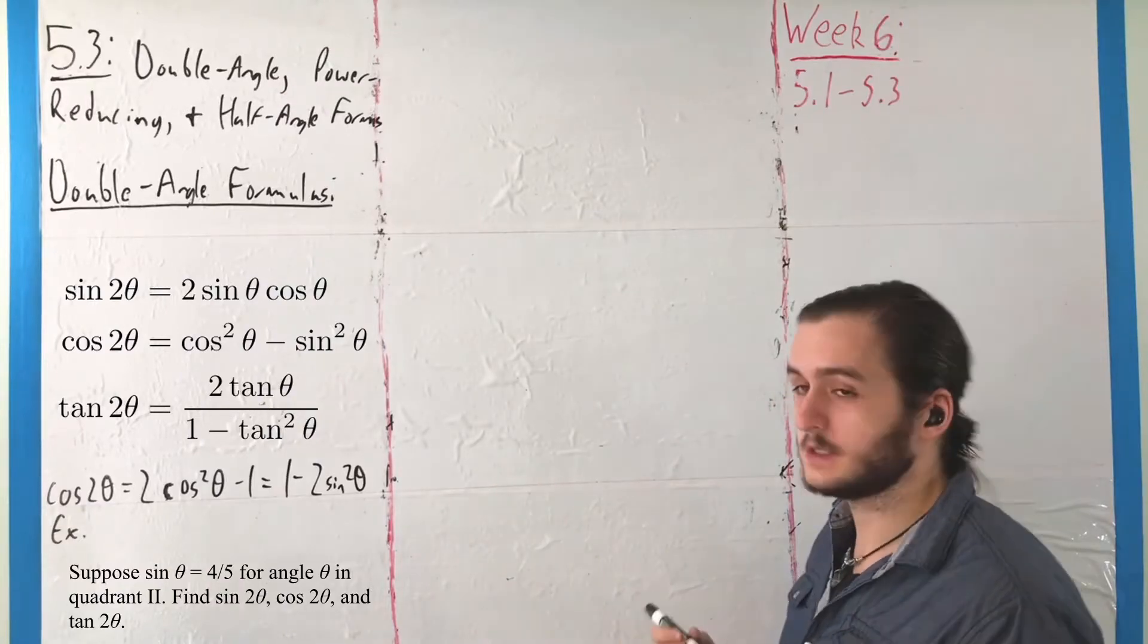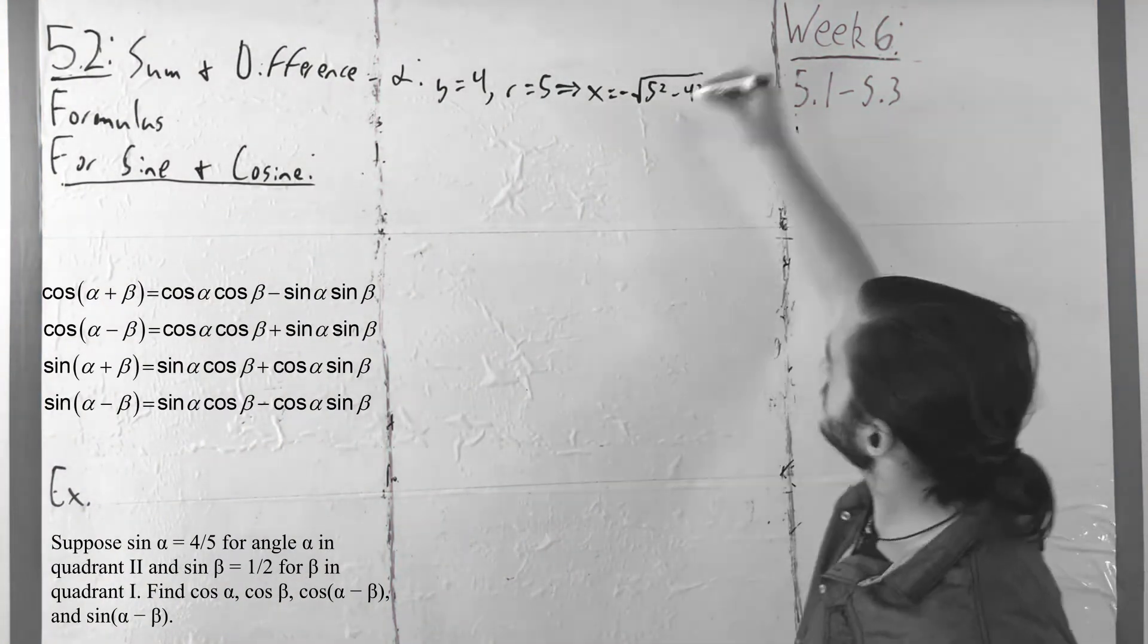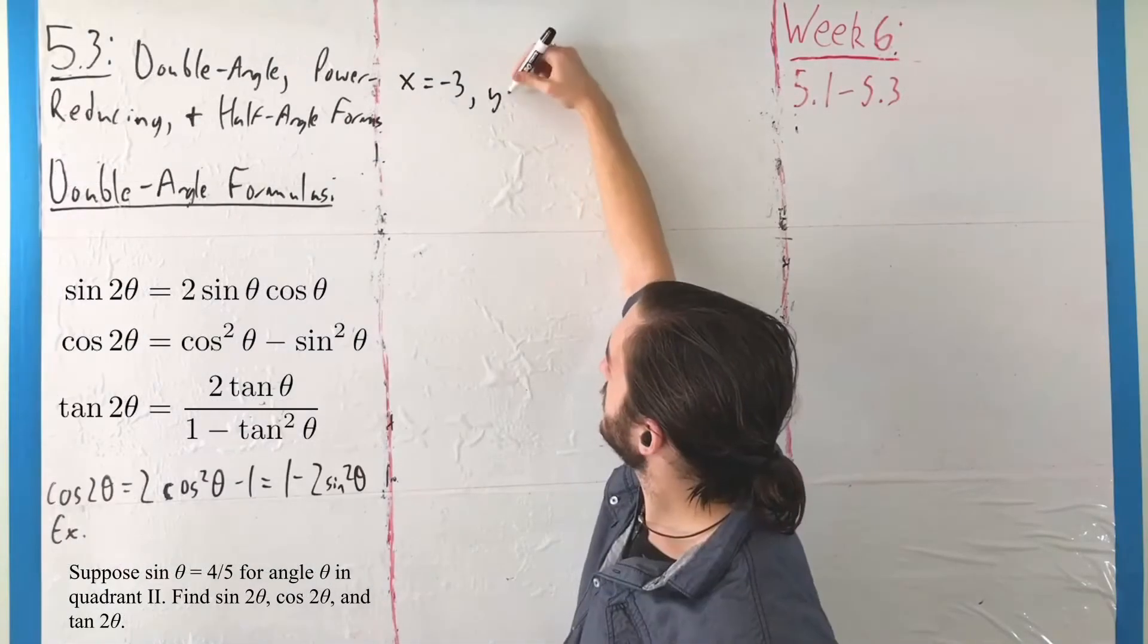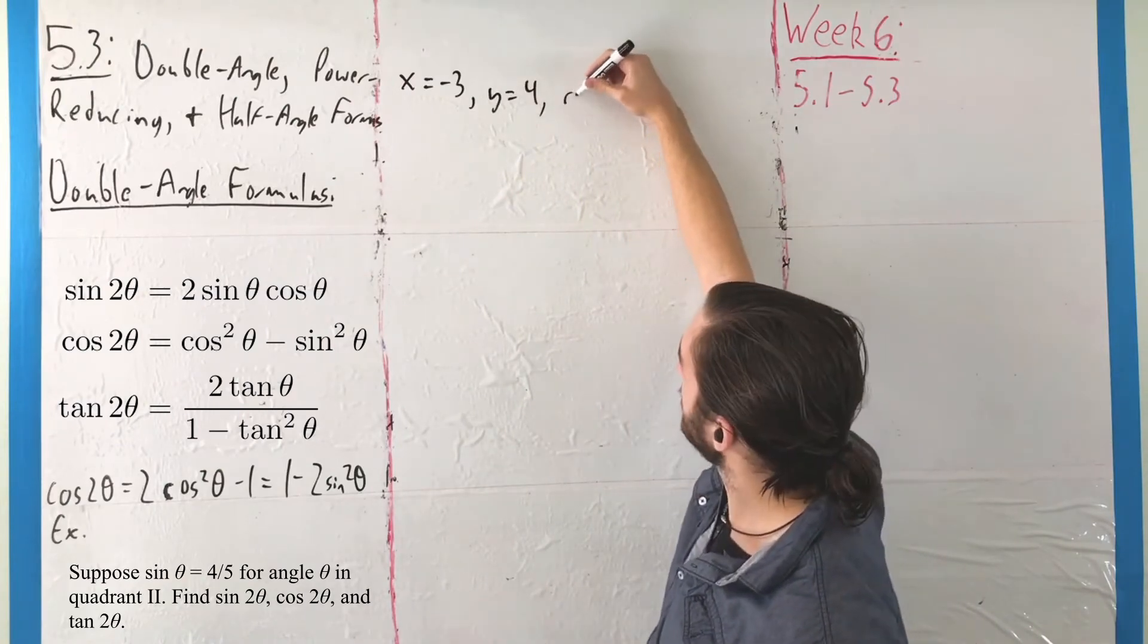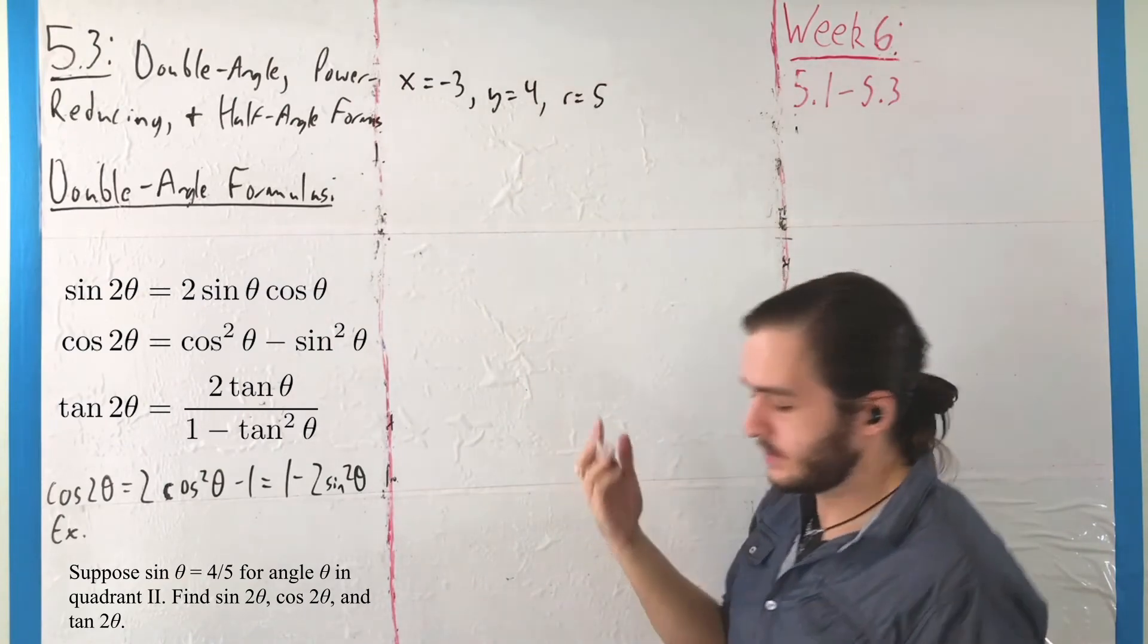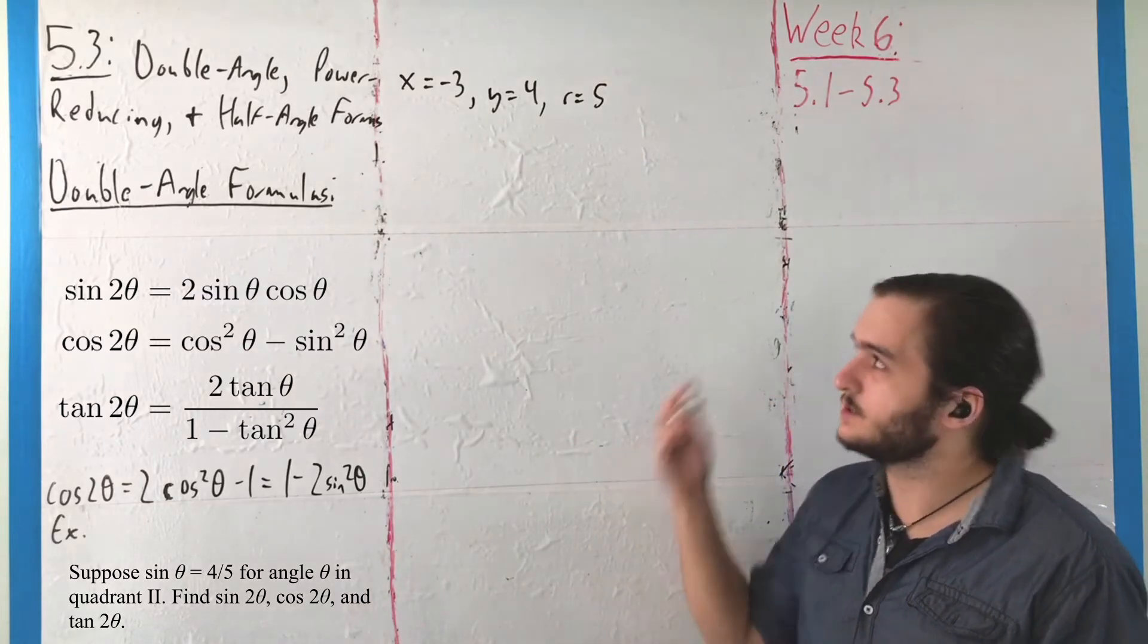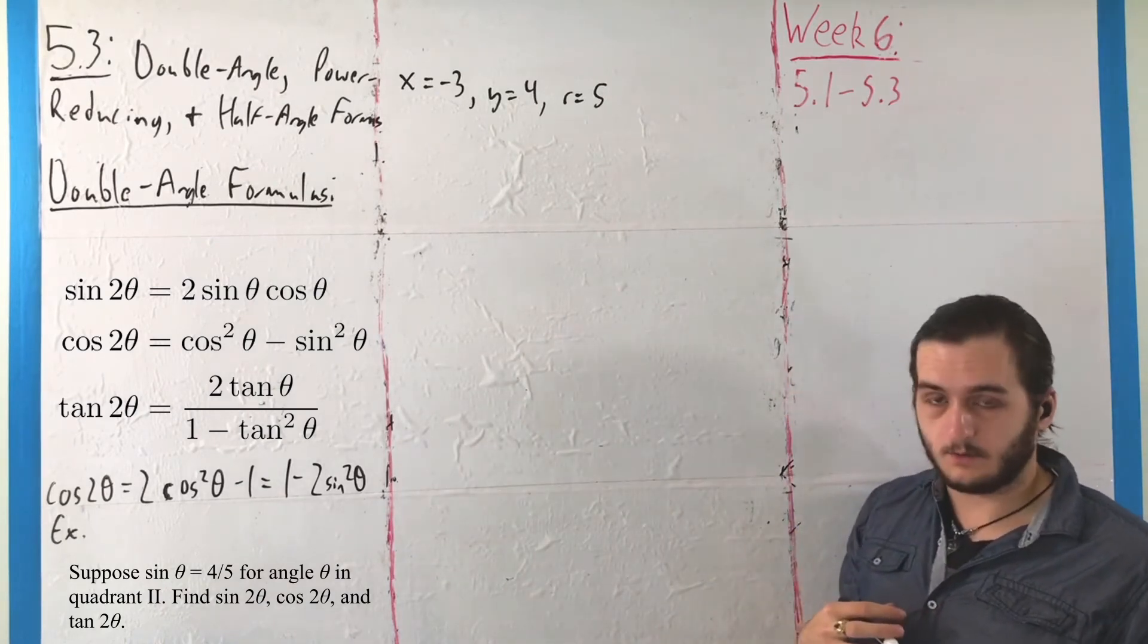We already saw this example in the last section. For that information about sine of θ, we got x equals negative 3, y equals 4, and r equals 5. To get these values for our trig functions, all we have to do is apply those numbers with the formulas.